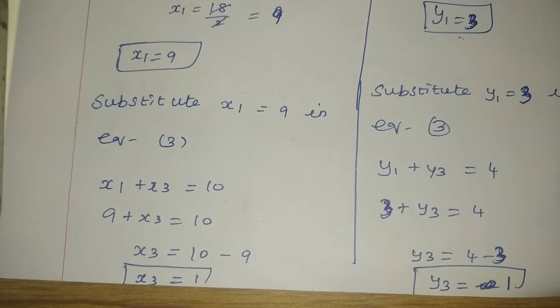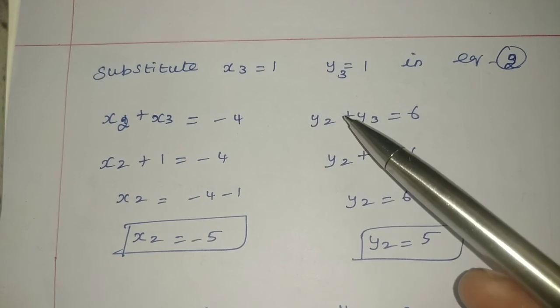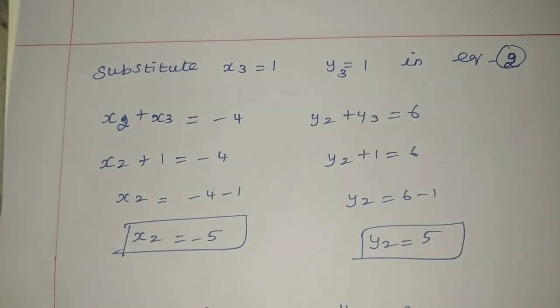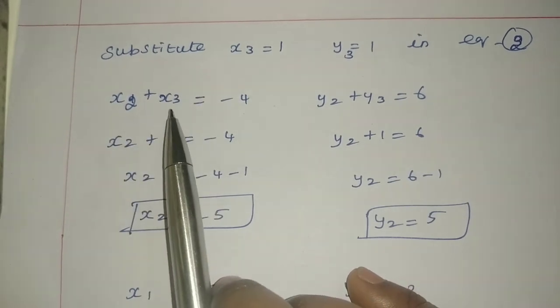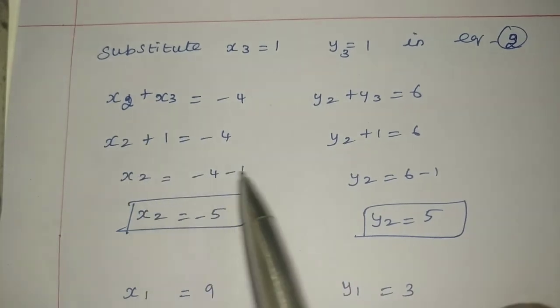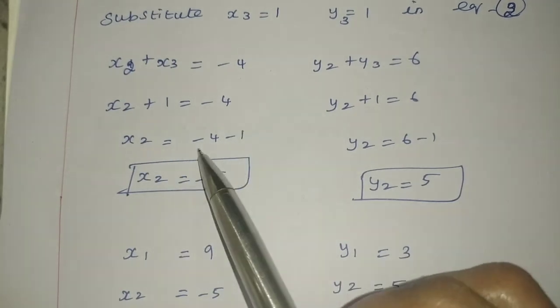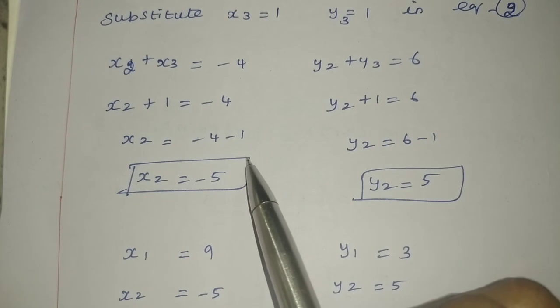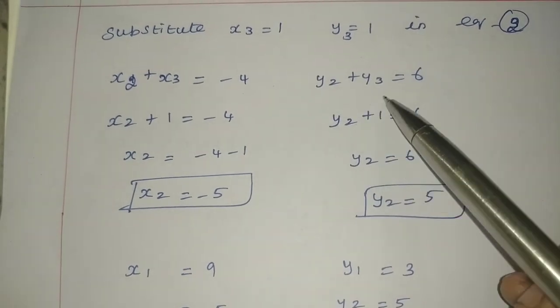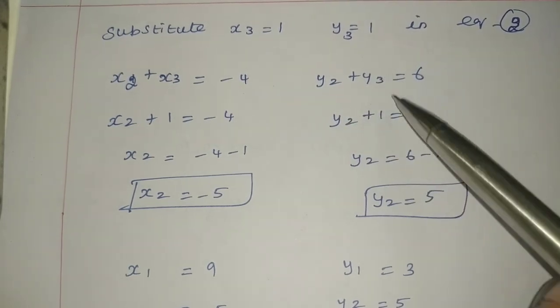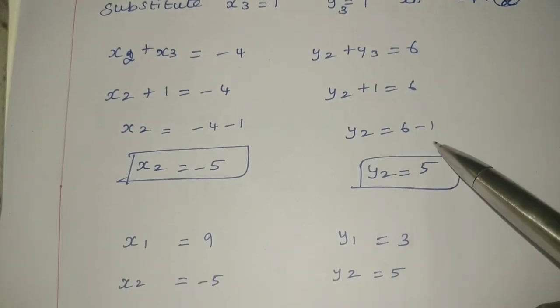Now substituting x3 equals 1 and y3 equals 1 in equation 2: x2 + 1 equals -4, so x2 equals -5. And y2 + 1 equals 6, so y2 equals 5.